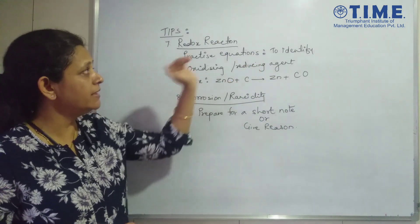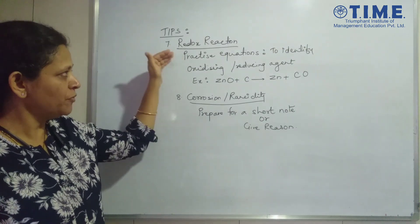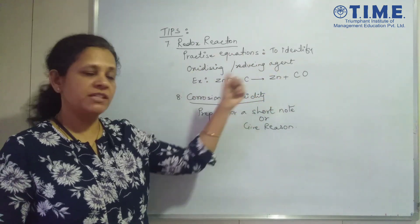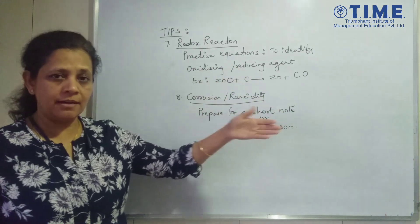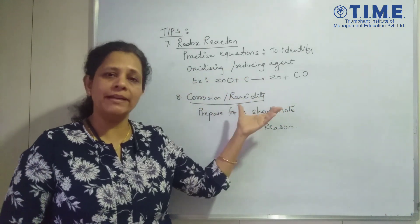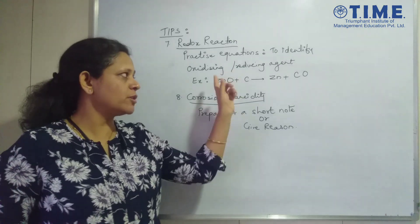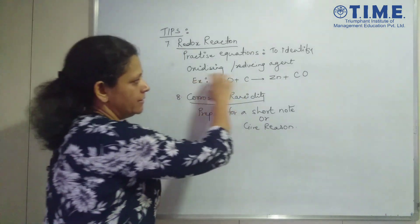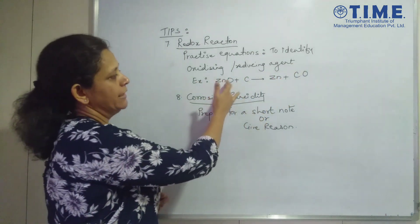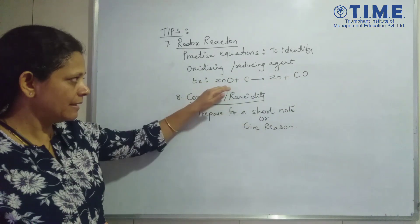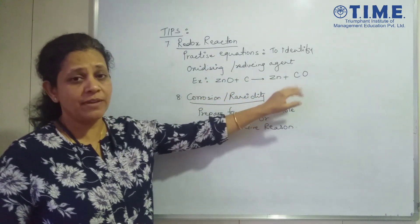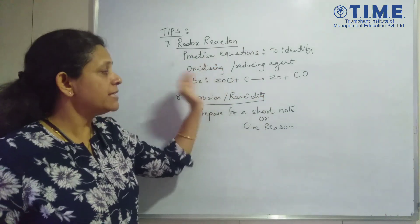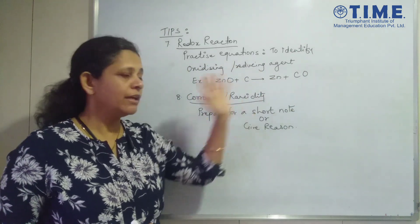The next type of the reaction, the last type that we have seen in that chart is redox reaction. The kind of questions that you can expect could be identify the oxidizing or reducing agent in the given equations. Now you have already studied what is oxidation, what is reduction, how to identify. So I do not get into the details of how to identify this. But there can be example, the equation is given to you and identify the reducing and oxidizing agent. So try and practice more such equations where you should be able to identify which element or which atom is undergoing oxidation and which one is undergoing reduction.